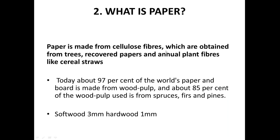Paper is made from cellulose fibers obtained from trees, recovered paper, and annual plant fibers like cereal straw. The cellulose can be obtained from these three sources. Today about 97% of paper and board is made from wood pulp, and out of this wood pulp, 85% is softwood. Softwood comes from trees such as spruce, fir, and pine.